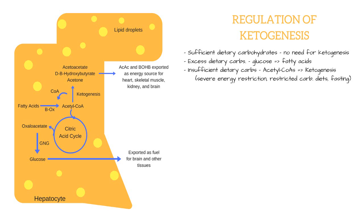Conversely, when there is not enough carbohydrate for efficient glucose metabolism — such as in conditions of low-calorie diets, carbohydrate-depleted diets, fasting or dietary deprivation, or in pathologic conditions like uncontrolled type 1 diabetes — adipose tissue releases fatty acids, and these are broken down into acetyl-CoA.